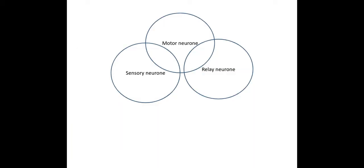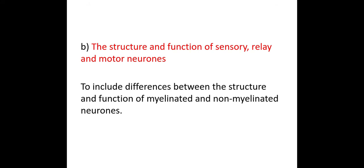It might help if you draw some kind of Venn diagram to help you summarise the differences and similarities between each of these neuron types. It's worth practising that in your own time as a nice bit of revision. So we've looked at the structure and function of these different types of neurons — we now need to look at myelination and what myelination is.